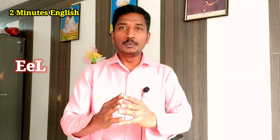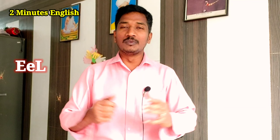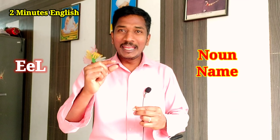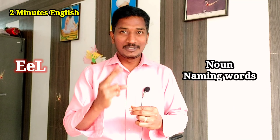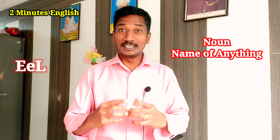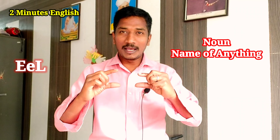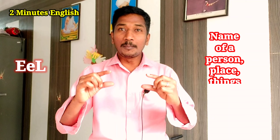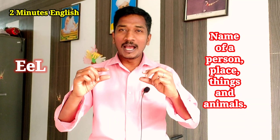Noun can be described in one word, two words, three words, or a group of words. Noun means name — naming words. Name of anything is noun. So a simple, elaborate definition: name of a person, place, things, or animals are called nouns.